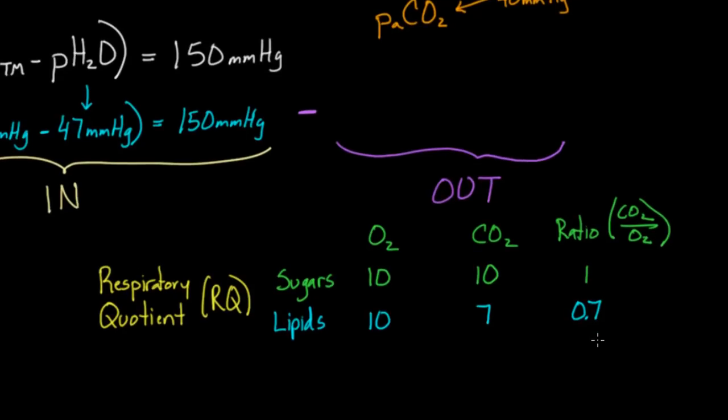And of course, we have diets that are probably mixed. Most people have a mixed diet, not just one thing or another. So if you have a mixed diet, they've estimated something in between and said, well, maybe a ratio of oxygen to carbon dioxide is something like 0.8.